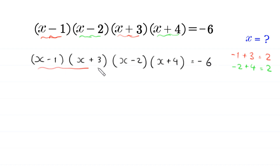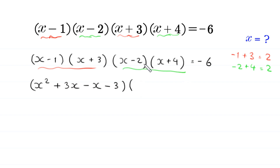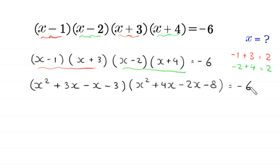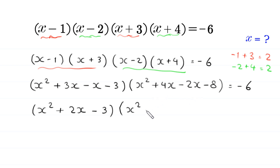Now we multiply these two pairs of terms. For the first pair: x times x is x squared, x times 3 is plus 3x, negative 1 times x is negative x, negative 1 times 3 is negative 3. For the second pair: x times x is x squared, x times 4 is plus 4x, negative 2 times x is negative 2x, and negative 2 times 4 is negative 8. So we get x squared plus 2x minus 3 times x squared plus 2x minus 8 is equal to negative 6.